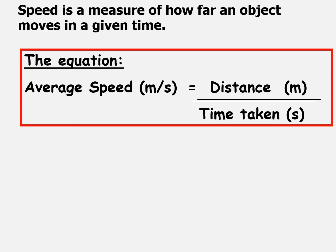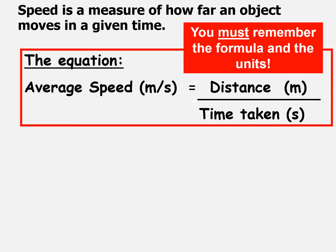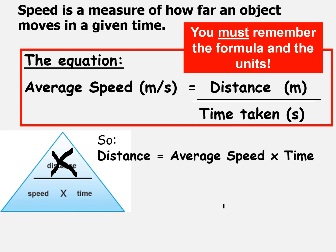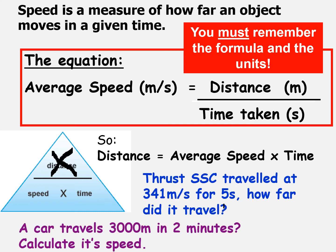Equation time — you've come across this one before. Speed equals distance divided by the time taken. At key stage four you've got to be able to recall the formula and the units, and use the formula triangle to make the subject any one of those three things. So there we go — distance is now x, and the triangle gives us: x = s × t, speed = x / t. A couple of questions to have a go at.